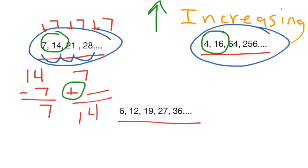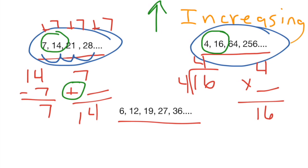When you see something like that, the thing that should pop into your head right away is multiplication. We're going to start by looking at these first two numbers, just like last time. You have a couple of options: you could say what is 16 divided by 4, and you would get 4. Or you could say what times 4 would give me 16. In both cases the answer is 4.